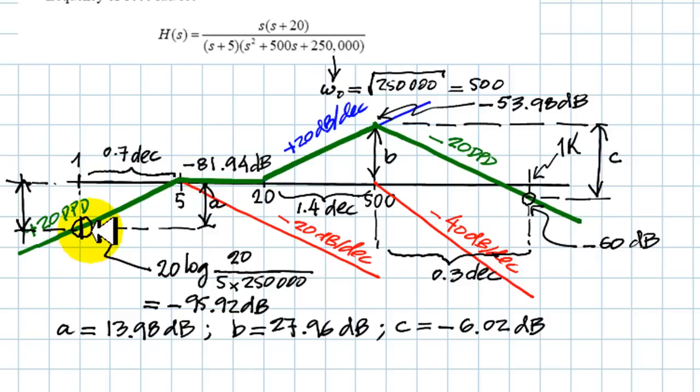Those values are minus 81.94 decibels, the value here, plus A, and adding B, we get negative 53.98 decibels here at the top, and then downwards to 1,000 radians per second, we subtract C, and get negative 60 decibels, the value in decibels of the transfer function at 1,000 radians per second.